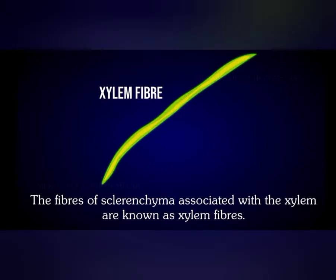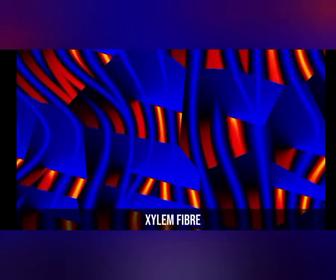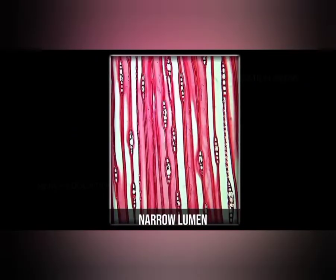Coming to the xylem fibers, they generally provide strength to the xylem tissue. They are generally made up of sclerenchyma, that is why they will be very strong. The xylem fiber, vessels and tracheids — all three are dead tissues. Xylem fibers' main important function is to provide structural support and also strength to the xylem tissue.